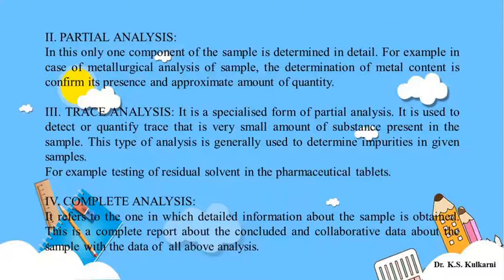The third type is trace analysis, which is a specialized form of partial analysis. It is used to detect or quantify trace — that is, very small amounts of a substance — present in the sample. This type of analysis is generally used to determine impurities in a given sample, since the main components are present in larger amounts while impurities are present in very small amounts. An example is testing for residual solvent in a pharmaceutical tablet — trace analysis tells you what amount of solvent remains after manufacturing.